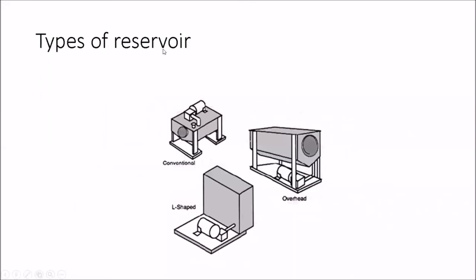Now let's look at the types of reservoir. The reservoir is also called a tank. We have many types: a conventional tank, an overhead conventional tank where the working machines are on top, and an L-shape type where the pump and working machines are at the same level. These are three types of reservoir configuration which are frequently used when setting up machines.